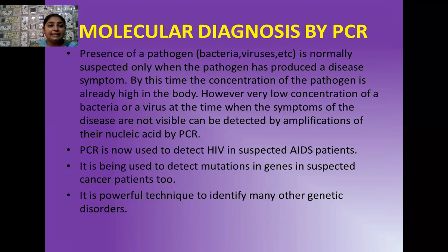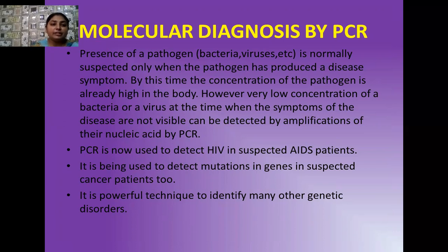PCR is a highly effective technique. It is used for finding out the HIV genome in suspected AIDS patients. It is also playing a significant role in detection of mutations in genes in suspected cancer patients. It is a powerful technique to identify different kinds of genetic disorders. Nowadays, whether symptoms appear or not, we need not wait — we can use PCR to amplify the genetic material of the pathogen and, in the absence of symptoms, find out which pathogen caused the disease and what its concentration in the body is.